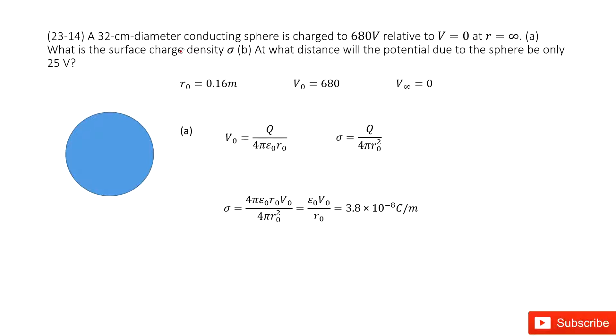So we can see we have a conducting spherical object. The conducting keyword tells us the charge is uniformly distributed at the surface. The diameter is given, so we can easily get the radius for this spherical object. And the potential difference of the electric potential at the surface is given.